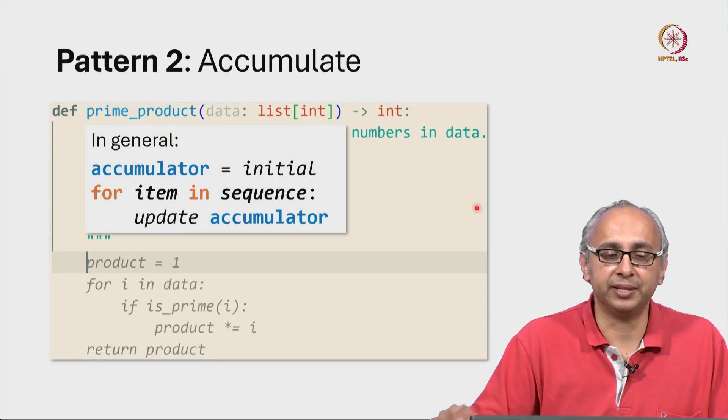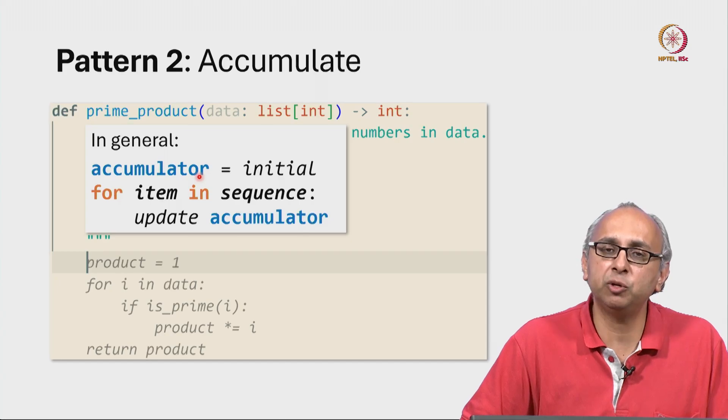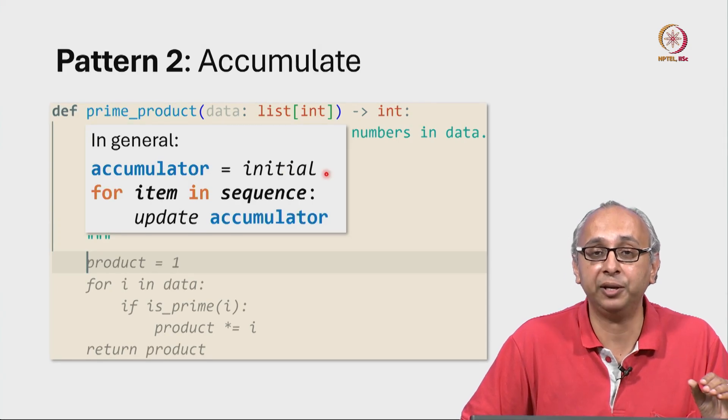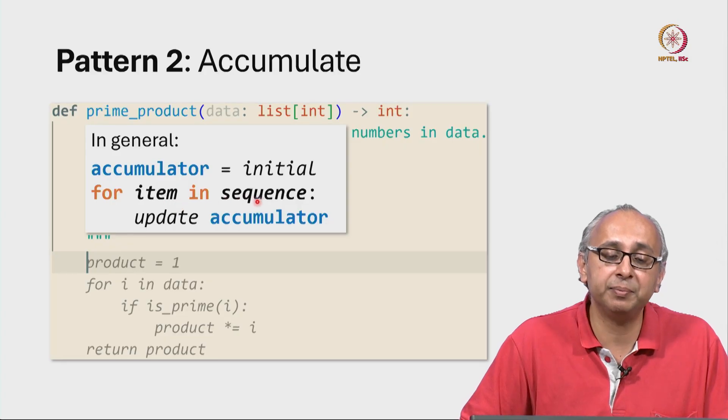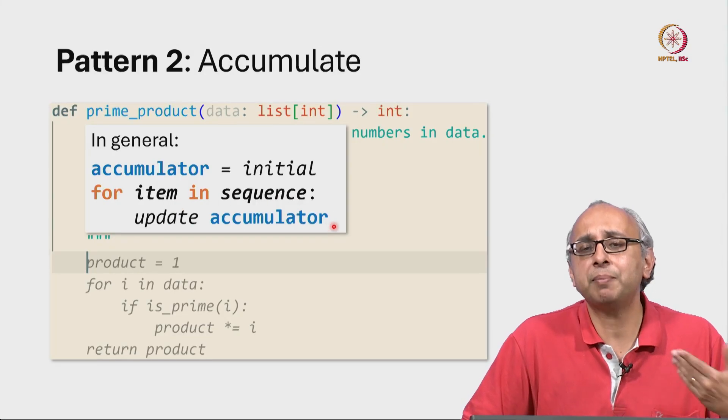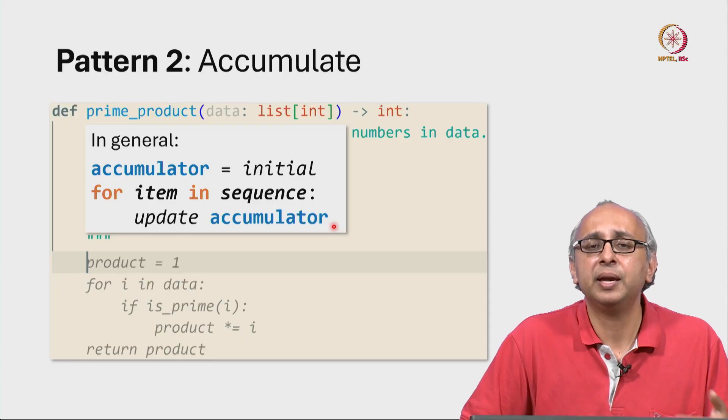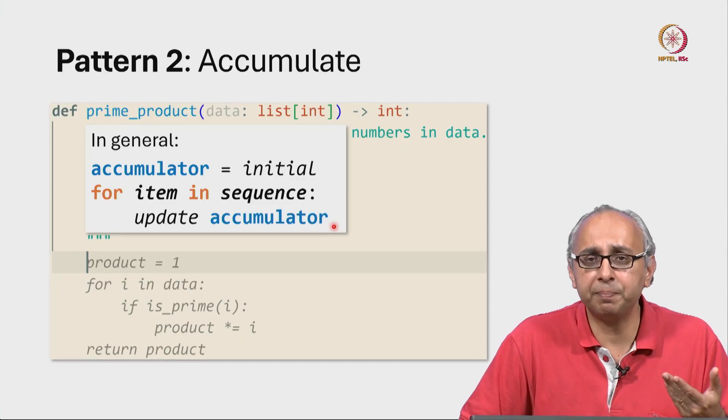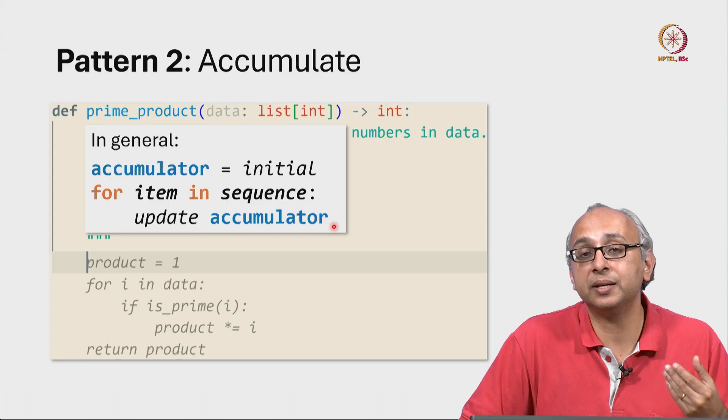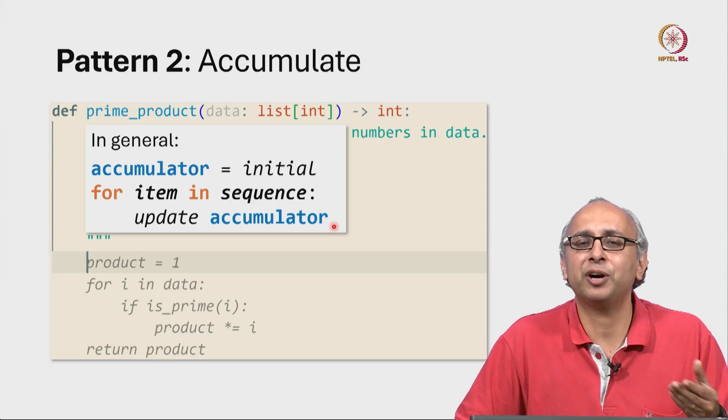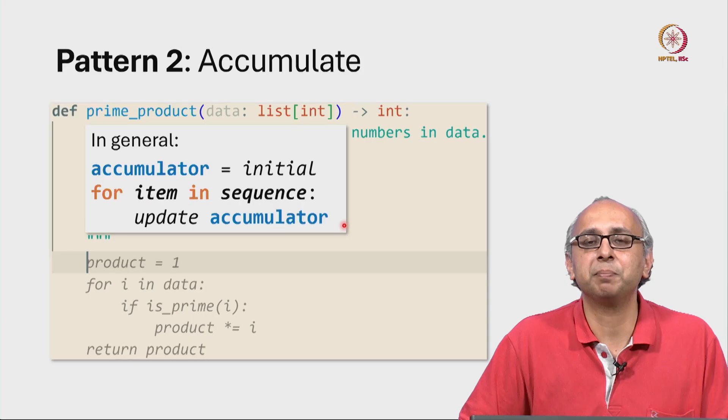So in general, you will see this kind of pattern where you have some accumulator initialized to some appropriate initial value. And then for each item in the sequence, you would somehow decide whether or not to update the accumulator. And it could be that in some examples, the accumulator is updated in a certain way for some items and in a slightly different way for other items. But this is the general pattern.